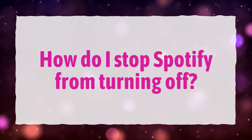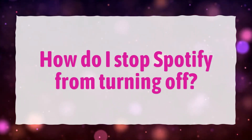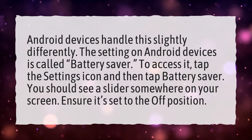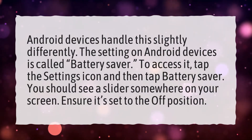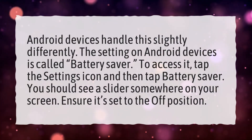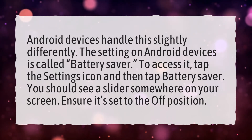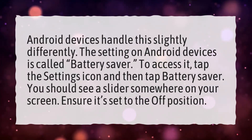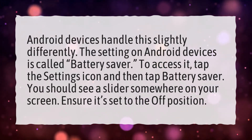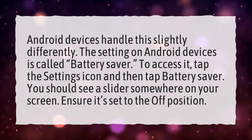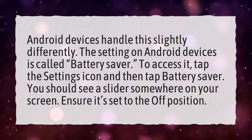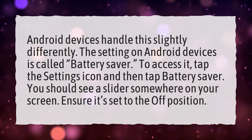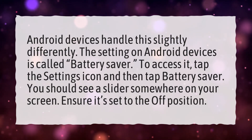How do I stop Spotify from turning off? Android devices handle this slightly differently. The setting on Android devices is called Battery Saver. To access it, tap the Settings icon and then tap Battery Saver. You should see a slider somewhere on your screen. Ensure it's set to the off position.